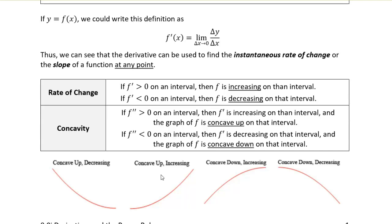So we can tell, from just the sign of the derivative, whether the function is increasing or decreasing. If the derivative is positive, the function is increasing. If the derivative is negative, then it's decreasing, because it's just slope.